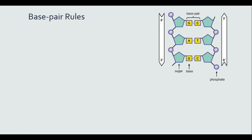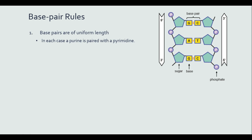Nucleotides are sometimes referred to as base pairs, so we have some base pair rules which we have to go over. First, base pairs are uniform in length. In each case, a purine is paired with a pyrimidine.